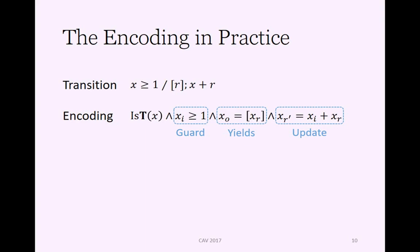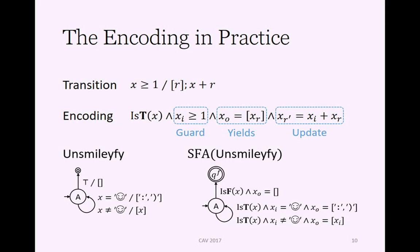If we look at the encoding of a whole SFA, if we for some reason wanted to try to minimize Unsmileyfy, which already has one control state, this is what the encoding of that looks like. Every transition here from Unsmileyfy is just mirrored by a similar transition in the encoding which uses this encoding scheme. Here we can see the additional final accepting state, which is the target for the encodings of the finalizers.